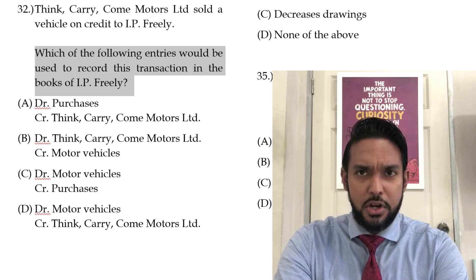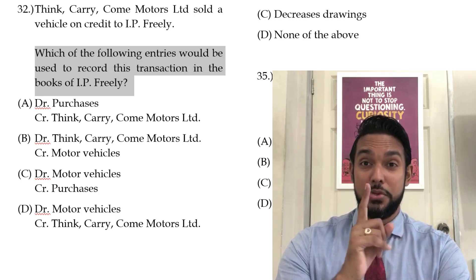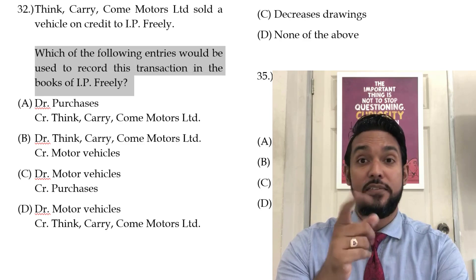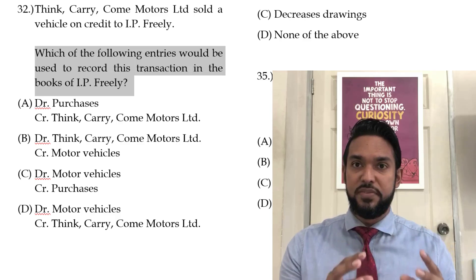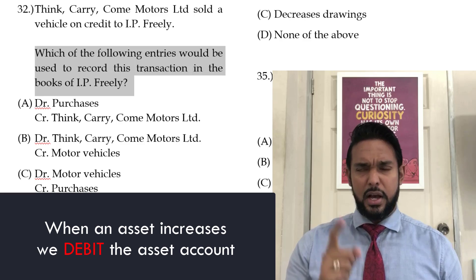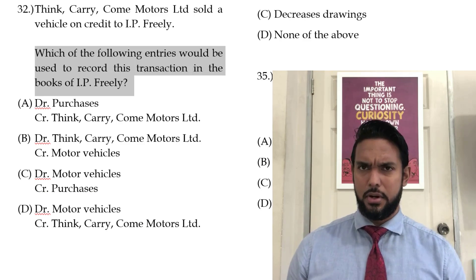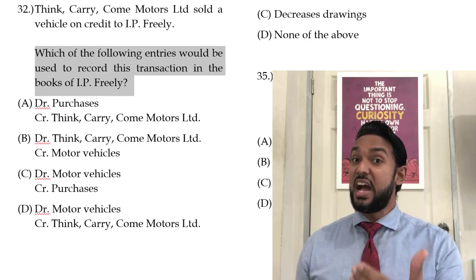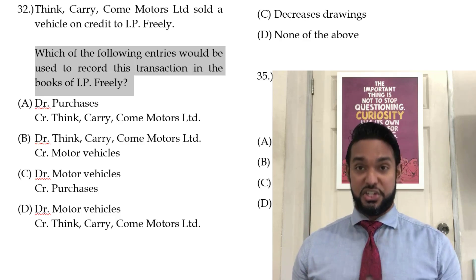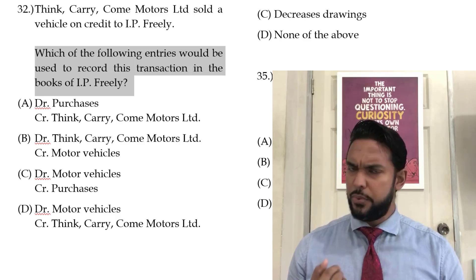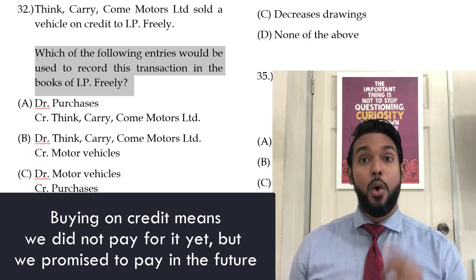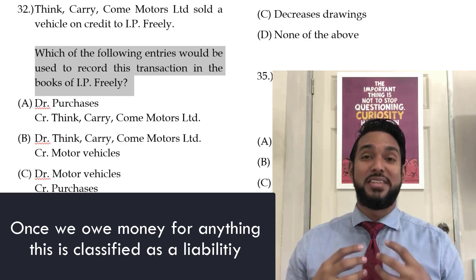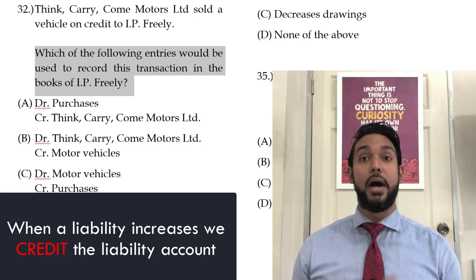A lot of you guys think the purchases account is involved when you purchase anything — that is not correct. The purchases account is only used when we record the purchase of stock, no other asset, just stock. So what are we buying? We are buying a motor vehicle. Motor vehicle is an asset — when an asset increases, you debit. We bought it on credit, which means we didn't pay for it. We promised to pay for it at a later point in time, which means we owe money for it — and that amount is classified as a liability. The liability is increasing, which means it requires a credit to that account.